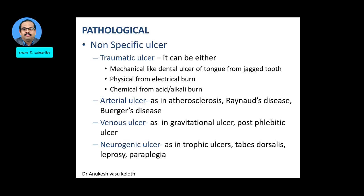Ulcers can be classified pathologically into 3 types: non-specific ulcers, specific ulcers, and malignant ulcers. Non-specific ulcers include traumatic ulcers — the cause being mechanical trauma, physical trauma, or chemical. Mechanical includes a dental ulcer of the tongue due to injury from an irregularly placed or jagged tooth.